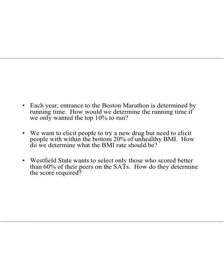Or we want to elicit people to try a new drug but need to elicit people within the bottom 20% of unhealthy BMI. How do we determine what the BMI rate should be? And finally, Westfield State only wants to select those who scored better than 60% of their peers on SATs. So what's the score we require? These are things that you can answer using the z-score.